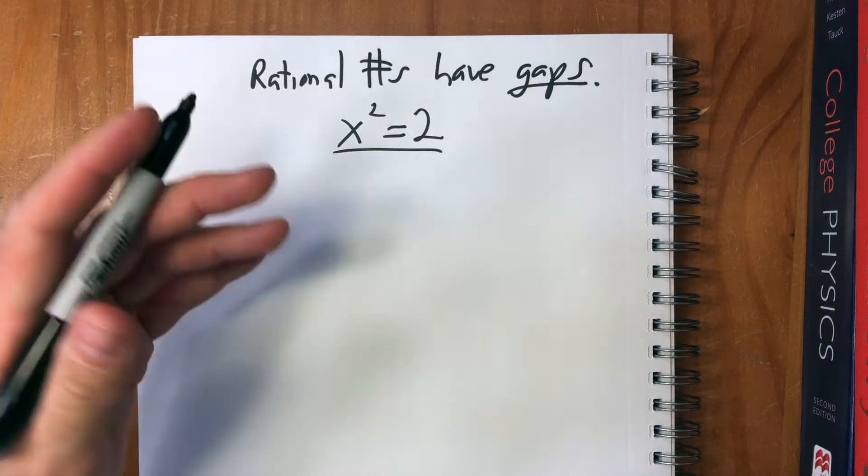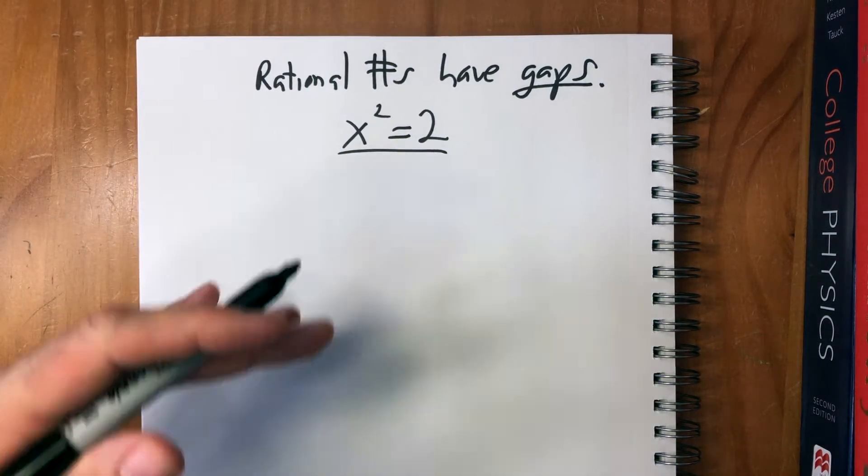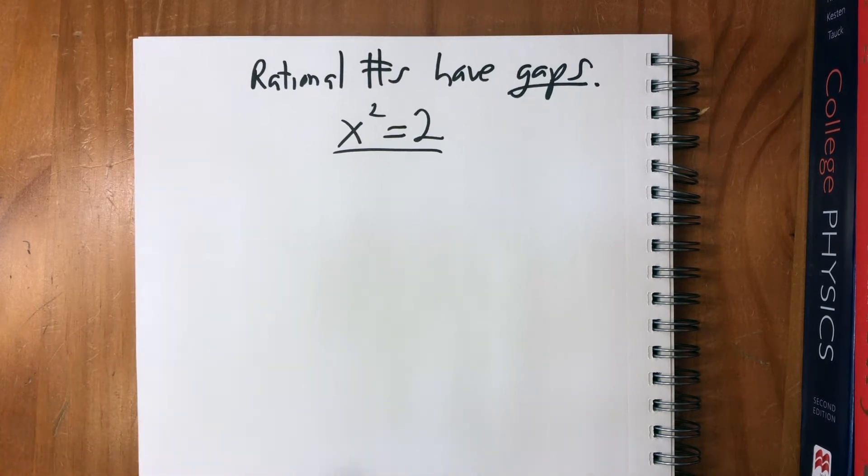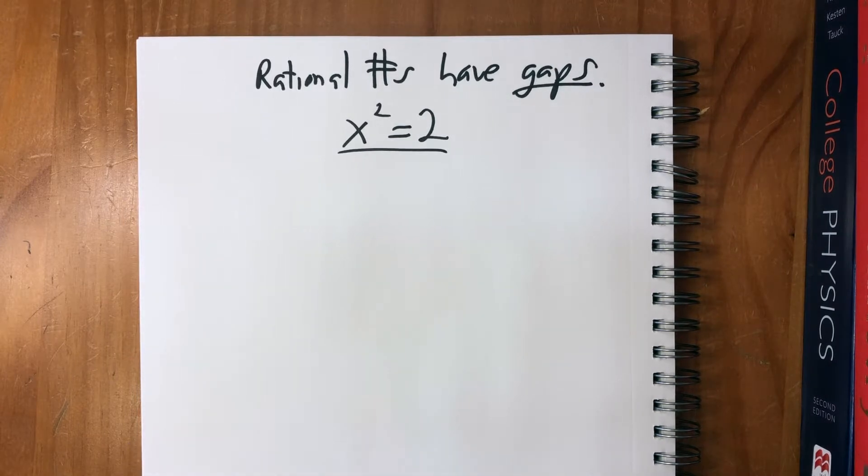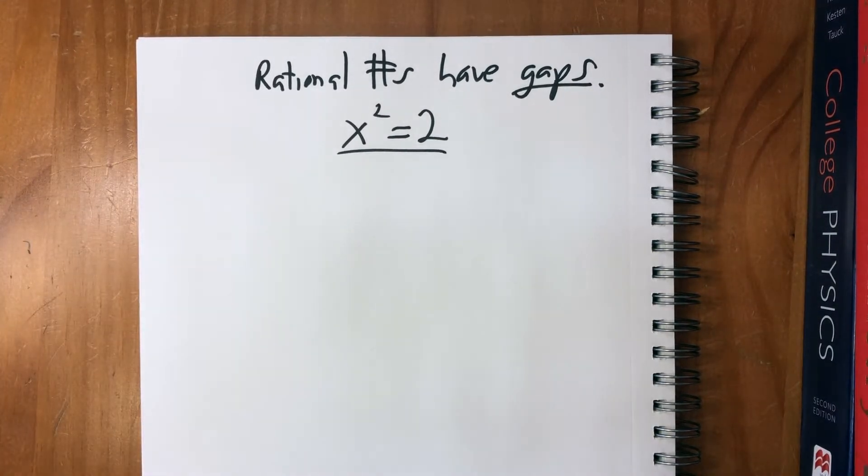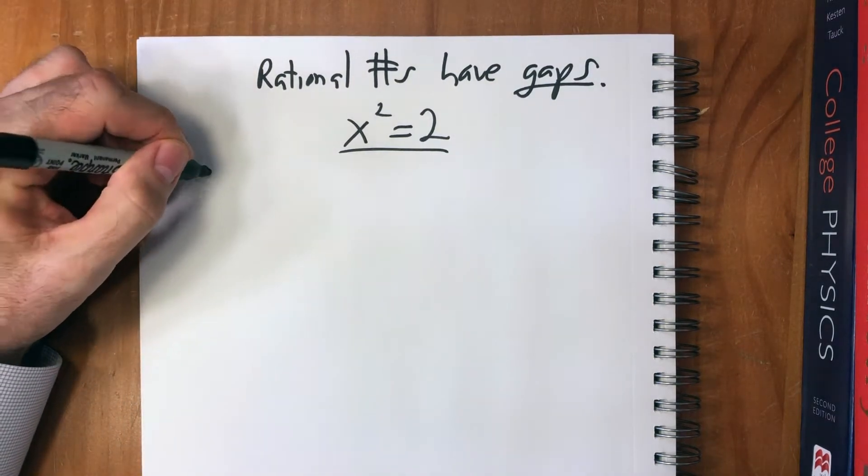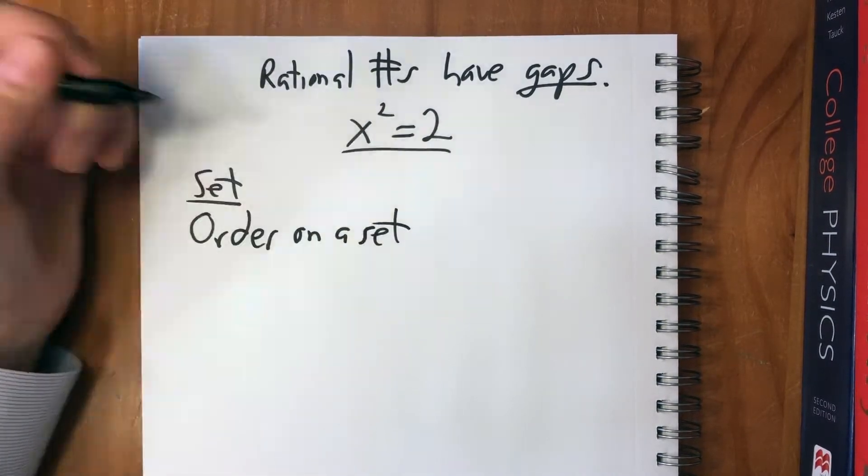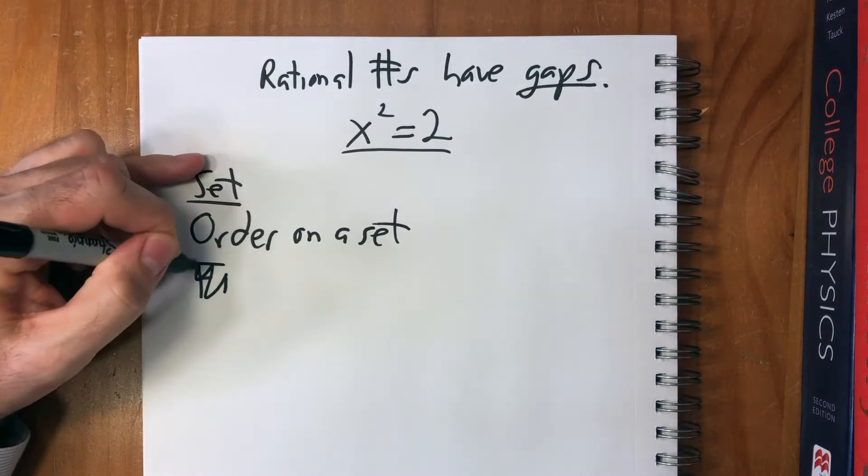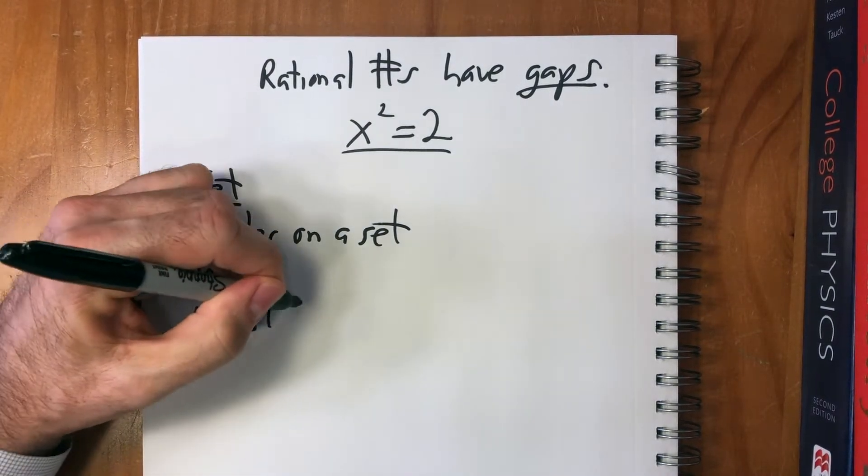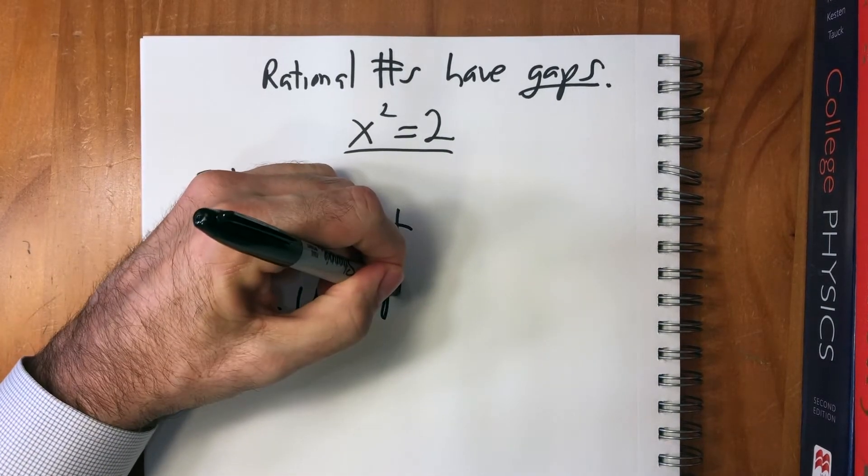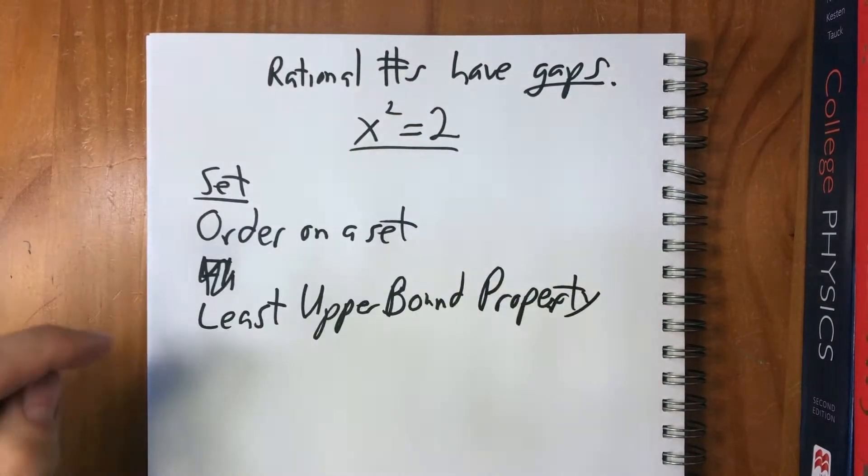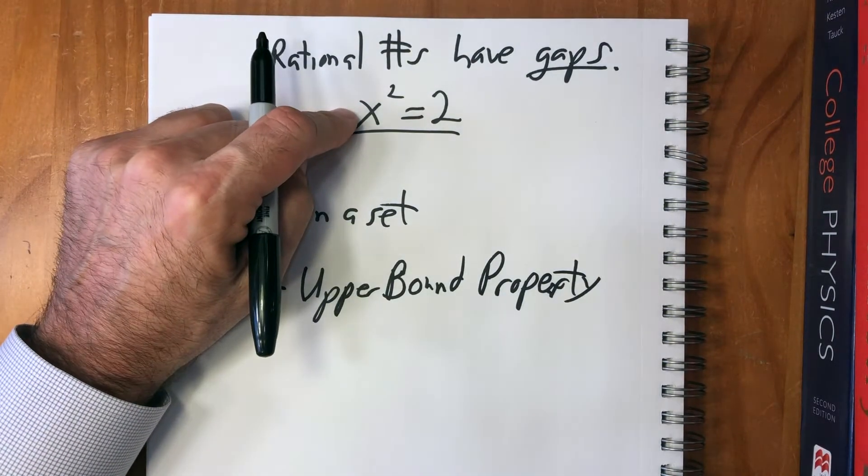And before we construct the real numbers, what we've been doing for the last several videos is just going over some general concepts, which are necessary to construct in a rigorous manner what it is that we're talking about. So we looked at what a set is, what an order on a set is, what a field is, and then before that we did the least upper bound property. And it's this concept that will allow us to fill these gaps.